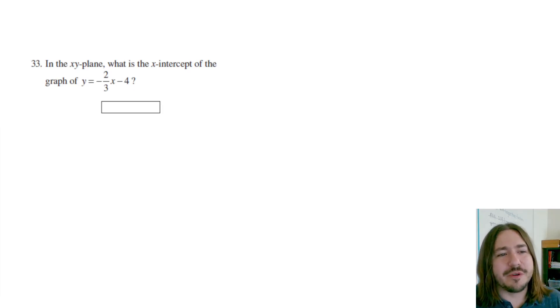Hey y'all, welcome back. Number 33 says, in the xy-plane, what's the x-intercept of the graph of y equals negative two-thirds x minus four?